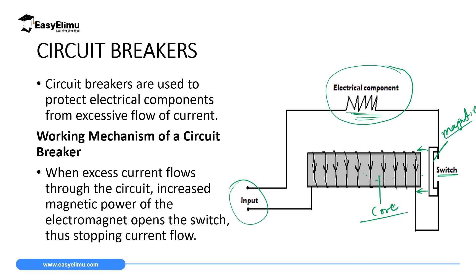When the current goes low — down to a level acceptable for the component — the soft iron core will lose some magnetism. When it loses magnetism it will release the switch material, which goes back and makes contact again. When contact is made, the component will start functioning again. So the circuit breaker works by switching off when there is excess current, and making contact again when the current is normal.